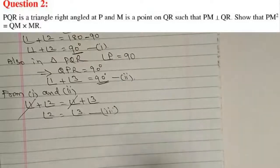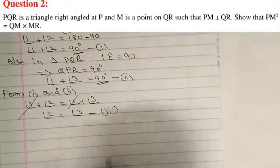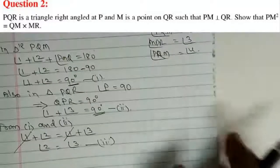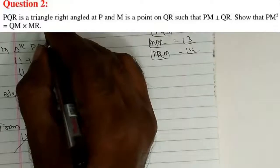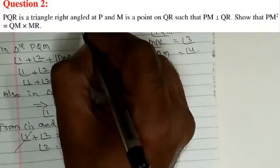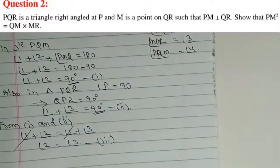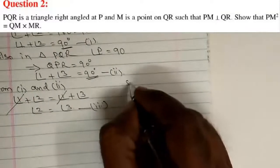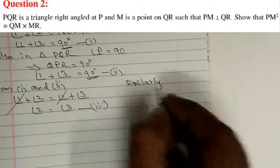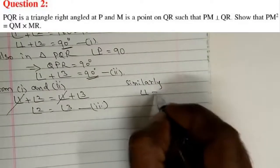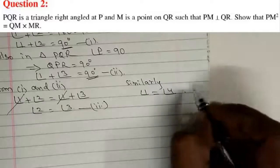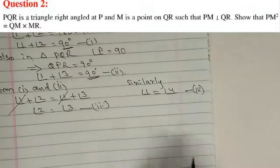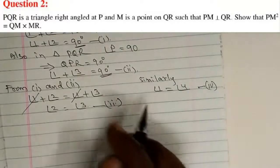Angle 2 equals angle 3 means this angle equals this angle in the diagram. Similarly, we can prove that angle 1 equals angle 4, which you can also prove in the examination if needed. We call this Equation 4.